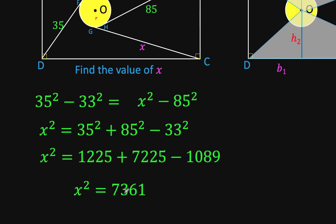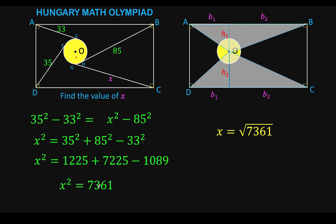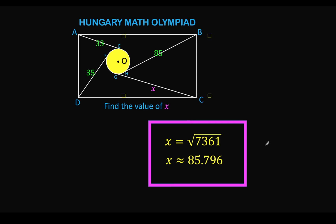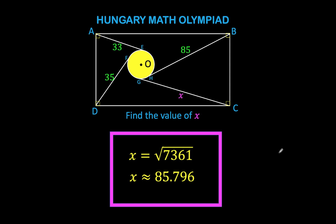Take the square root of both sides. We have X equals plus or minus the square root of 7,361. But since X is the length of a line segment here, then X cannot be negative. So we just take the principal square root of 7,361, which is approximately 85.796. And so this is now the value of X in this problem. So X is approximately equal to 85.796.